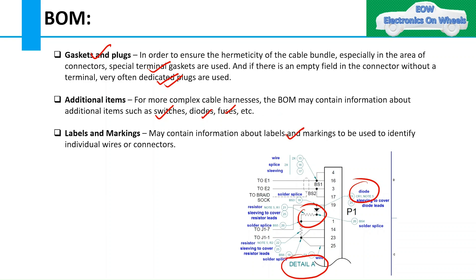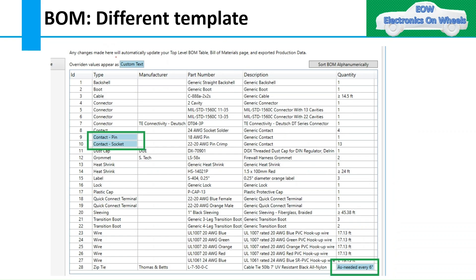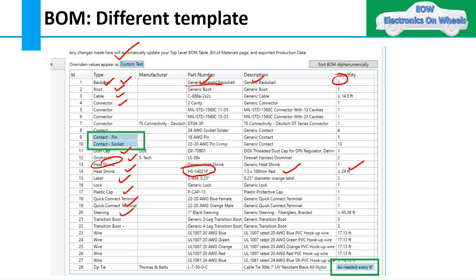This is one BOM format where you can see different information — for example, component type is backshell with a generic part number and quantity of 1. However, even if it's a generic part number, most of the time a specific part number will be assigned to the components. Similarly, you can see other components like heat shrink, which has part number HS14021P with dimension and quantity descriptions. Almost all components are part of this BOM table. Under the type column you can see: backshell, rubber boot, cable, connector, cap, grommet, heat shrink, label, lock, plastic cap, terminal, sleeve, wire, and zip tie.